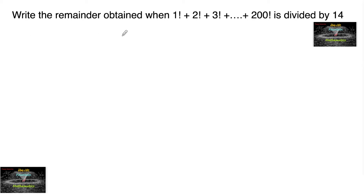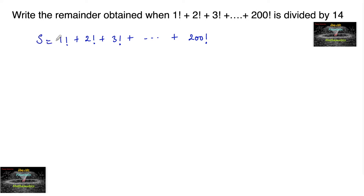Write the remainder obtained when 1 factorial plus 2 factorial plus 3 factorial and so on up to 200 factorial is divided by 14. So let us take this sum as S. S is equal to 1 factorial plus 2 factorial and so on up to 200 factorial. We know that 14 has 7 as a factor — 7 into 2 is 14 — so it should be divisible by both 7 and 2.